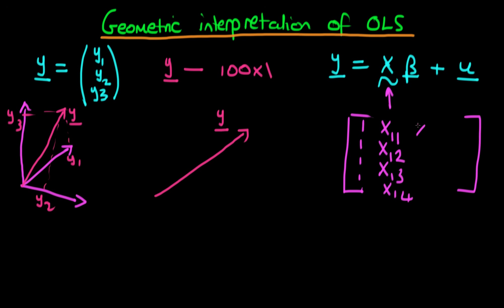Then we might have another vector of observations for another variable, which I'm going to call x2. We have that for the first person, we have it for the second person, and so on. We can think about each of these respective columns as representing a particular vector space — in other words, it's a vector in space.